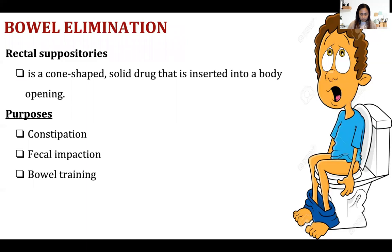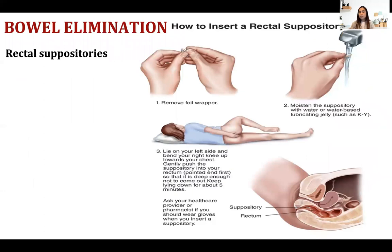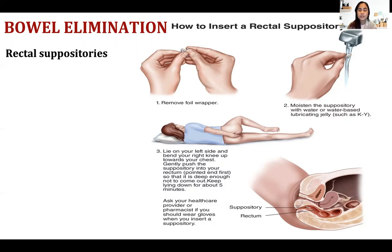Rectal suppositories are tried before enemas if the patient can defecate with them. A suppository is a cone-shaped solid drug inserted into a body opening, used for constipation, fecal impaction, and bowel training. To insert a rectal suppository, moisten it with water or lubricating jelly to prevent discomfort. Position the patient on the left side with the right knee bent — left lateral or left SIMS position — then insert it and keep it in for five minutes.